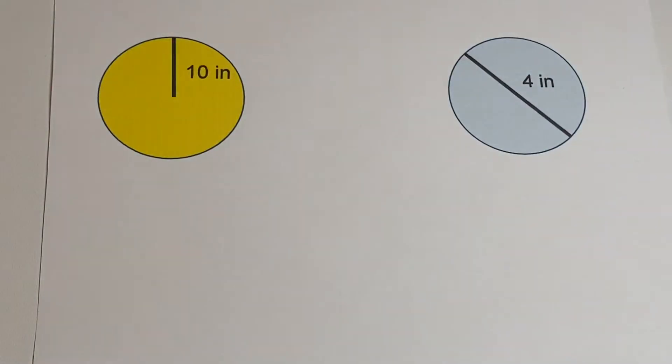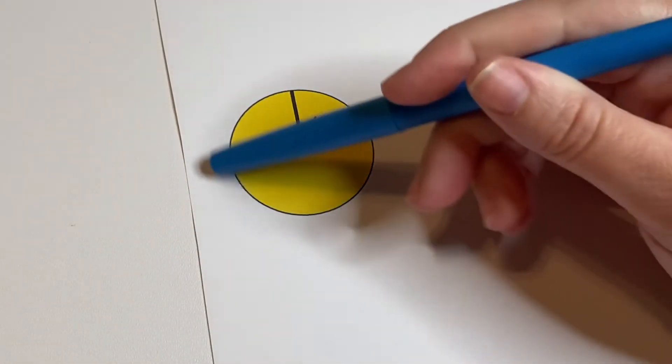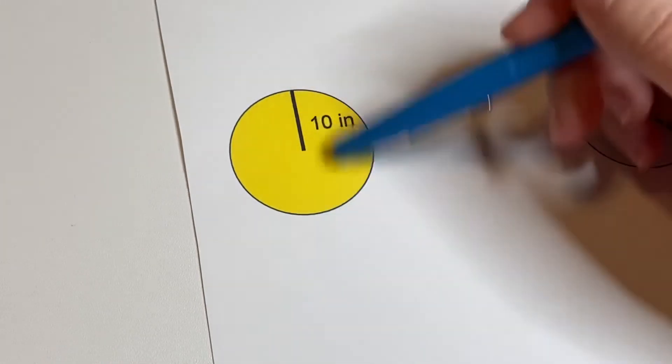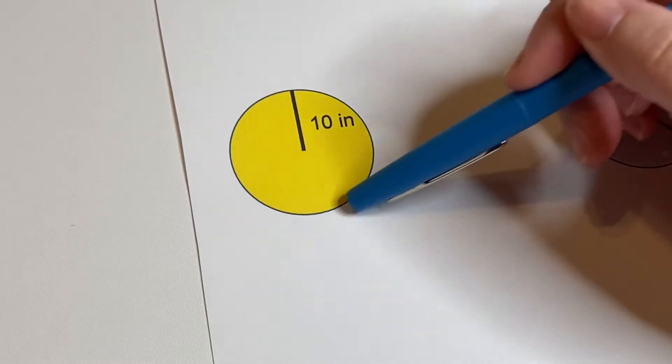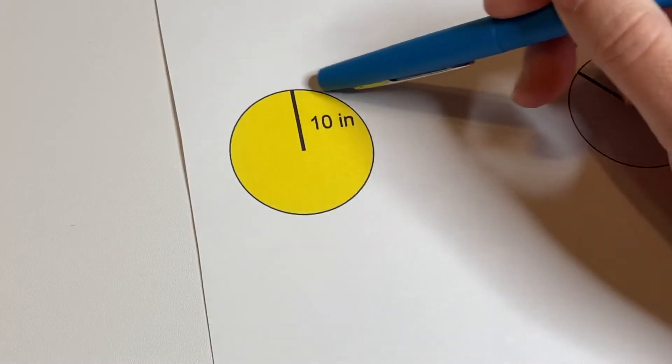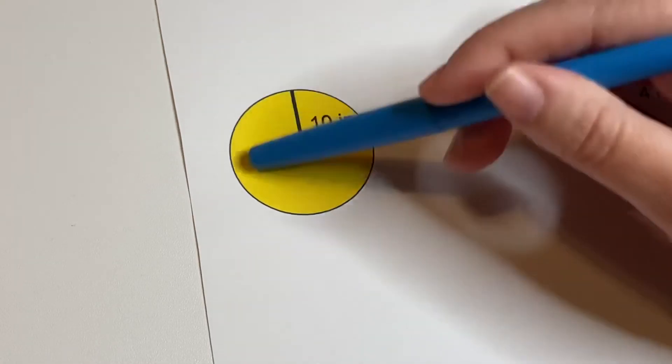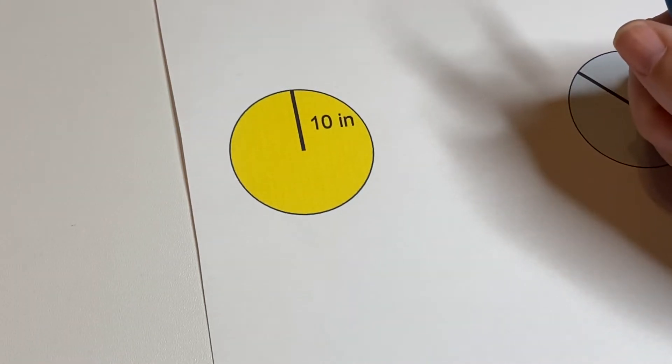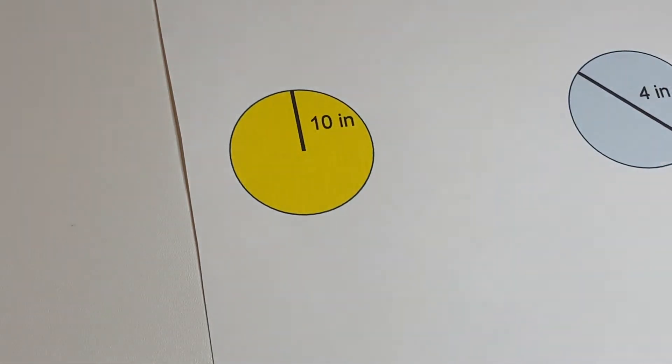We're going to talk about how you find the circumference. The circumference is the distance around the outside. It's like the walking path around, not the grass in the middle. It's the crust of the pie, this distance around the outside of this outer rim, not the surface area of the pie itself.